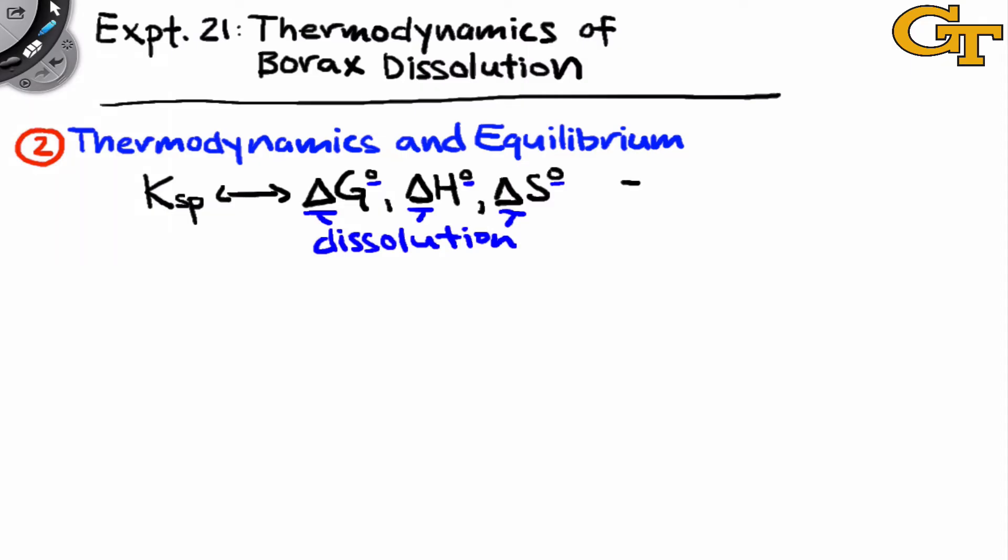So let's begin with an equation that comes out of the law of mass action. Negative R, the ideal gas constant, times T, the temperature, times the natural log of Ksp is equal to the standard delta G for dissolution.